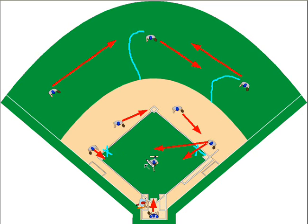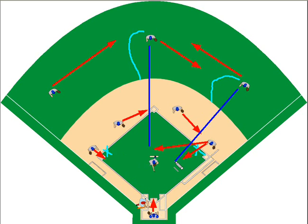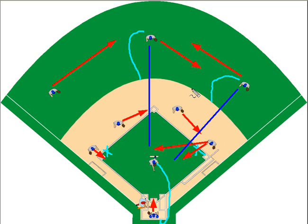The catcher will obviously cover home. The pitcher, because the throw is going potentially to the plate from either one of these positions, will back up home plate in case there is an overthrow so this runner can't advance. So this is the defensive setup for a fly ball to center or right field with runners on first and third.